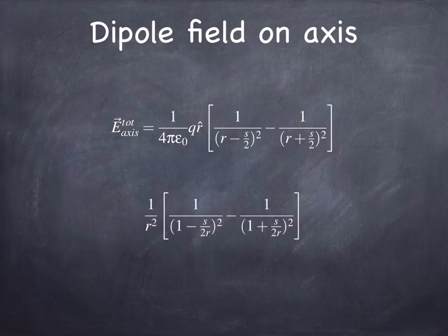And to simplify it, what I want to do is try to make it look like that thing we just worked out the approximation for. If I factor out the r downstairs, then these r minus s over 2 and r plus s over 2 become 1 minus s over 2r and 1 plus s over 2r. And as long as r is much greater than s, then each of those is 1 plus x, where x is something much less than 1. So we can use that approximation.